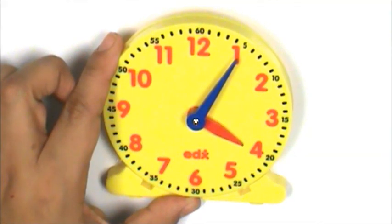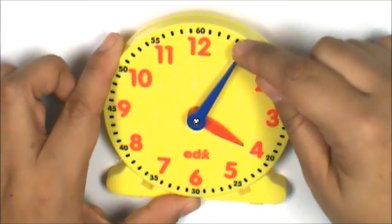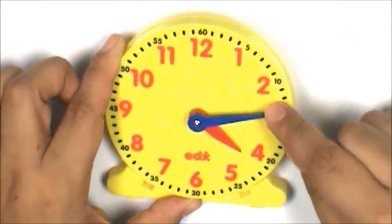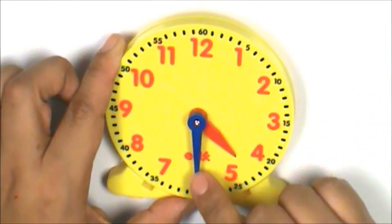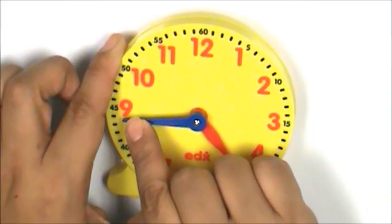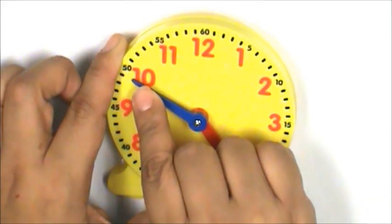The ballet class was 45 minutes long. That means I need to move the minute hand 45 minutes after the start of the class. 5, 10, 15, 20, 25, 30, 35, 40, 45.